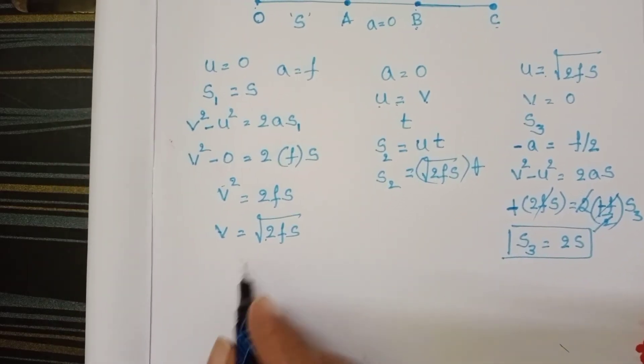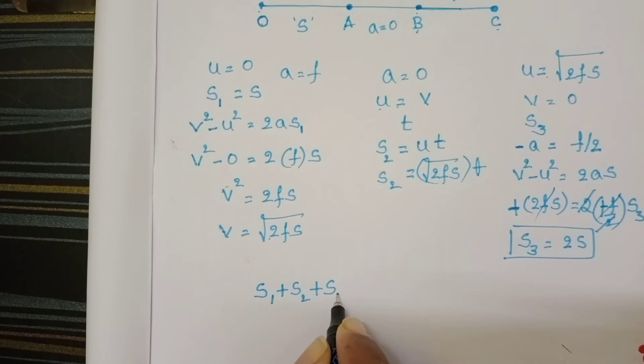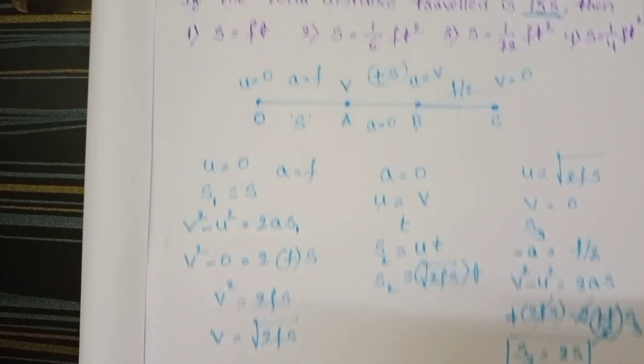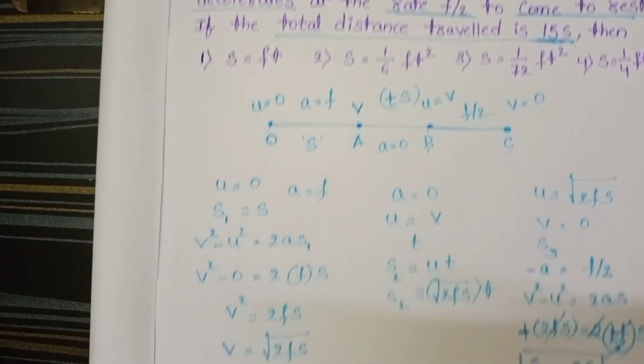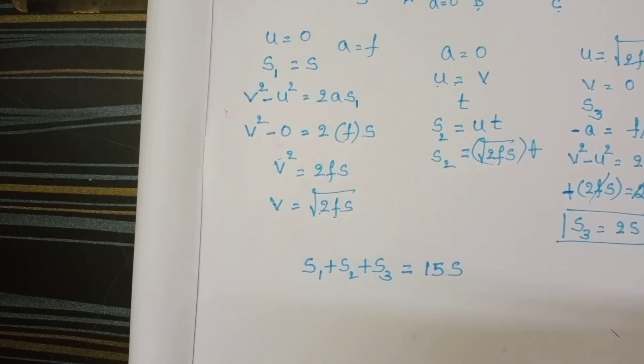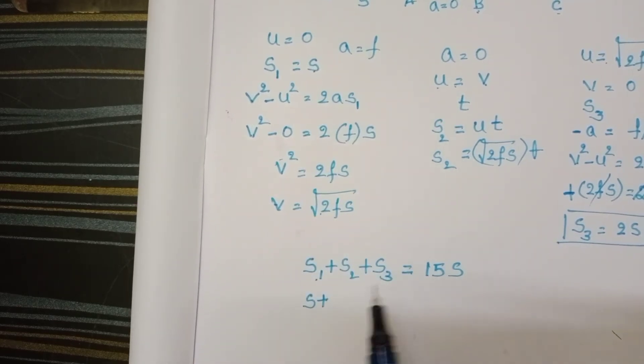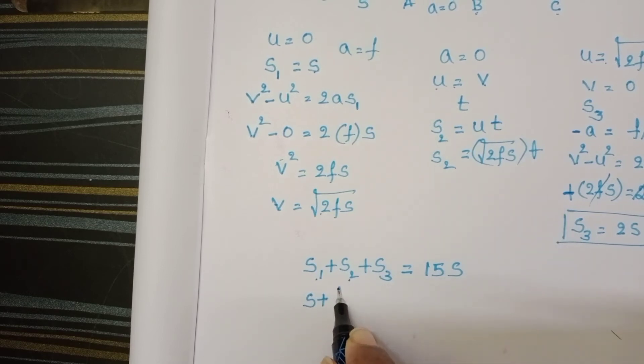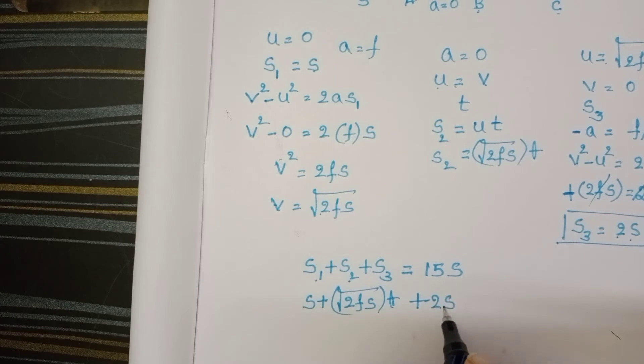Total distance s1 + s2 + s3 equals, here in given question, total distance traveled is 15s. So substitute here, s1 + s2 + s3 = 15s. s1 = s plus s2 = √(2fs) × t plus s3 = 2s equals 15s.